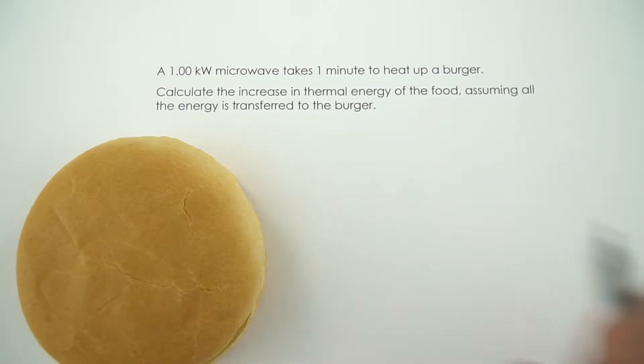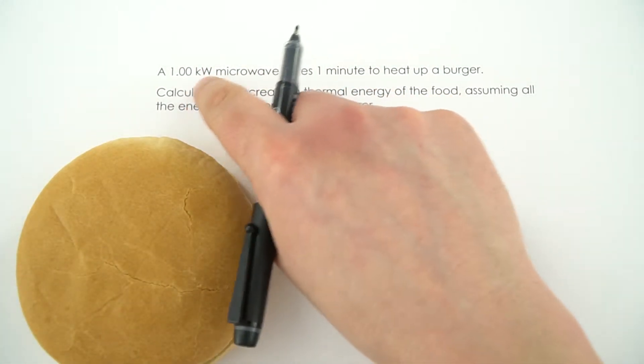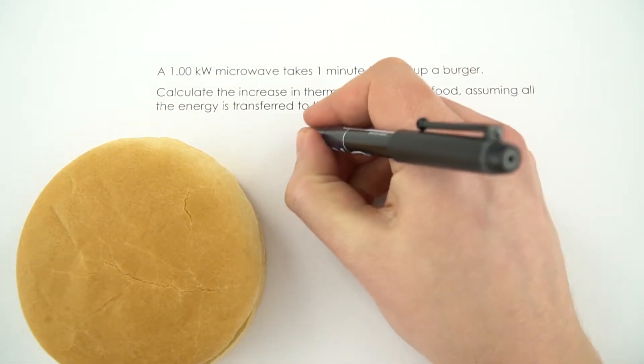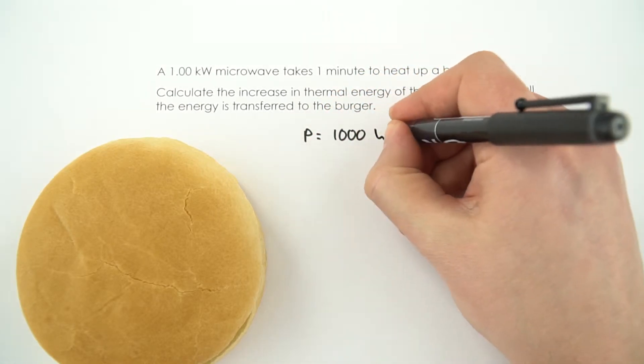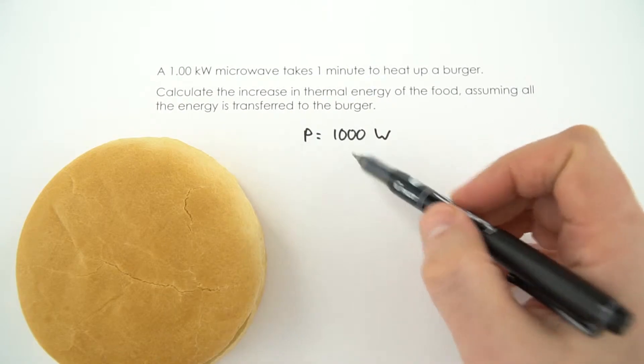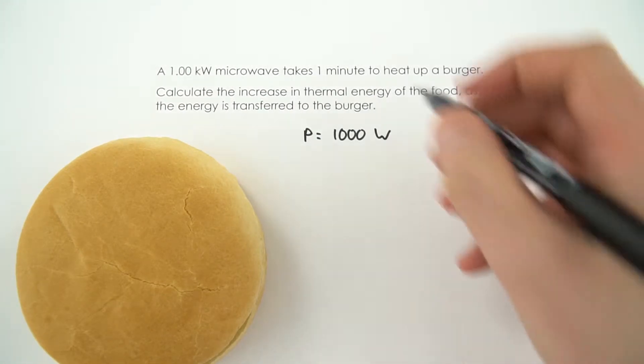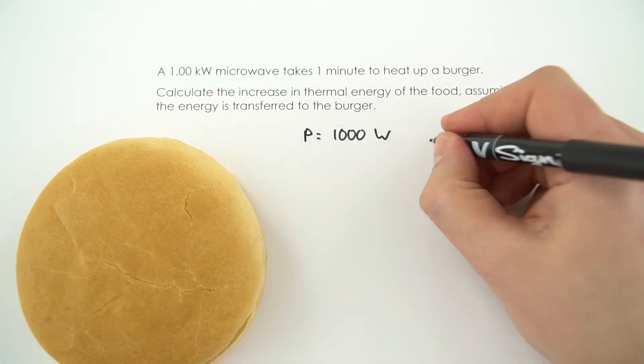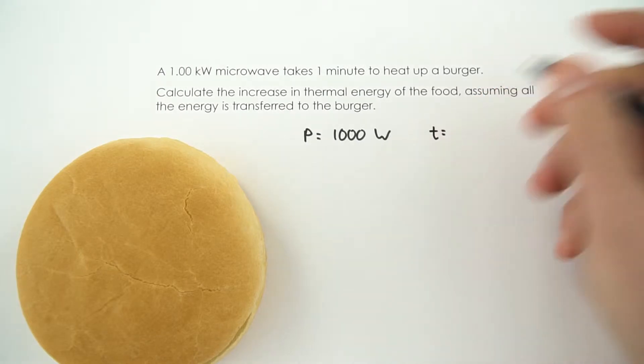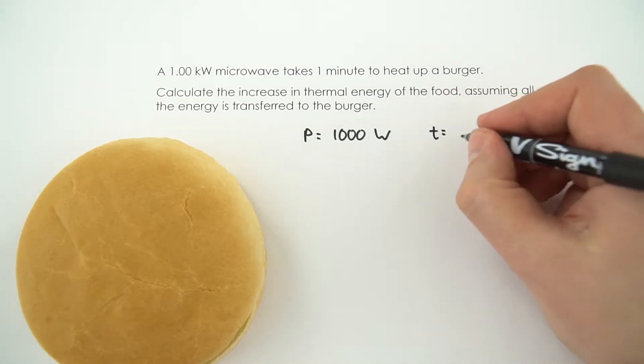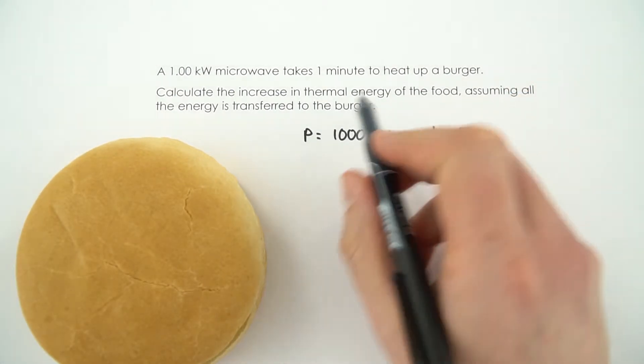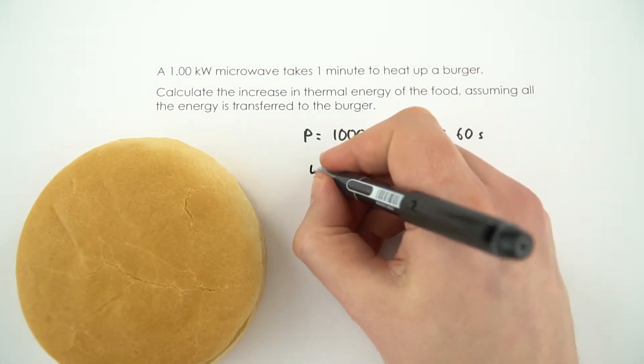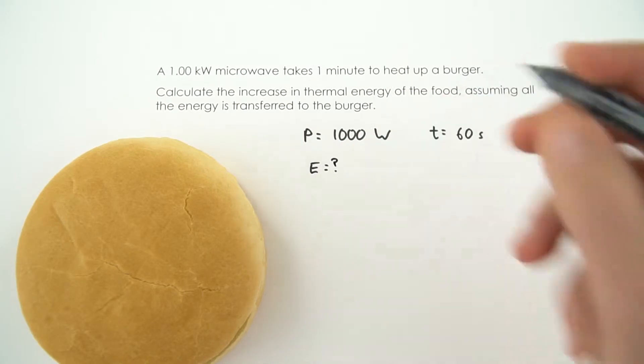So what do we know from the question? Well, it says here it's a kilowatt and therefore this must be a power. So we just converted that from kilowatts to watts to our standard SI units. The time was given here in minutes, but we always need to convert any time to seconds. So this is just going to be equal to 60 seconds. And we need to look at the increase in thermal energy. So this energy is our unknown quantity.